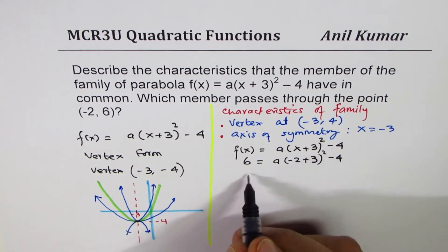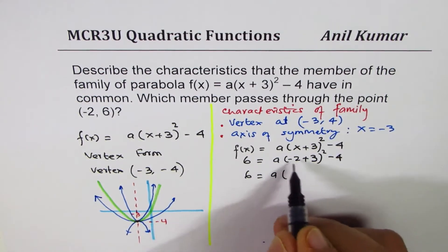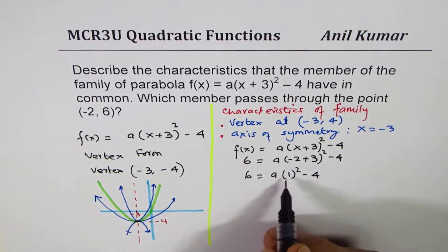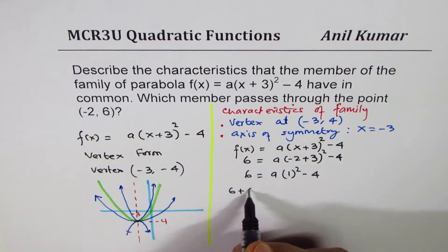We can calculate this. -2 plus 3 is 1, 1 square minus 4. So that is just 1. So we get 6 + 4 = a, which is 10.